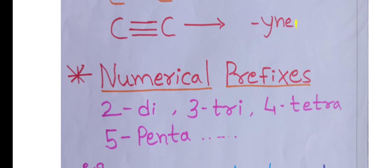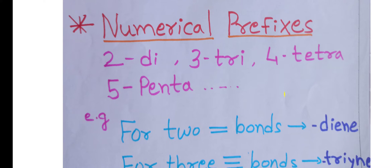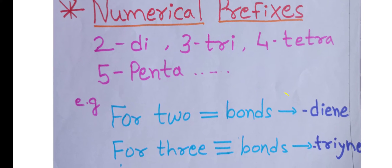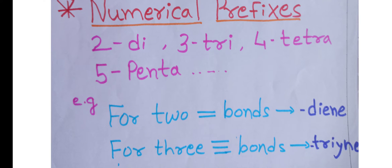Some numerical prefixes are also used: for two, di; for three, tri; for four, tetra; for five, penta; six, hexa, and so on. For example, if there are two double bonds, we use 'diene'. If there are three triple bonds, we use 'triyne'.